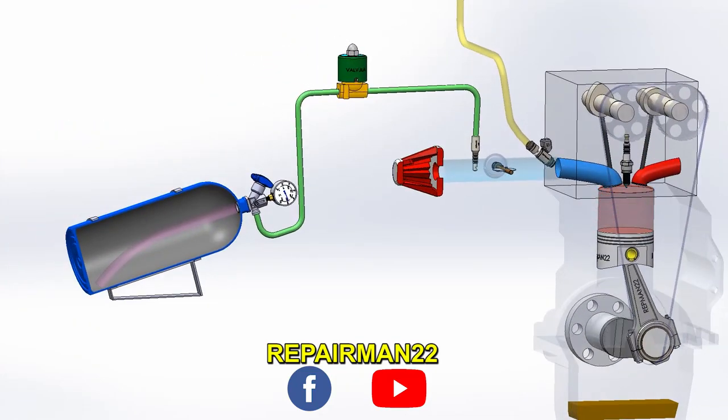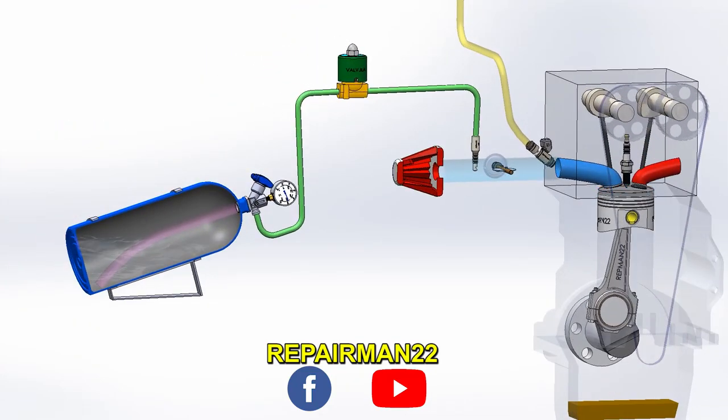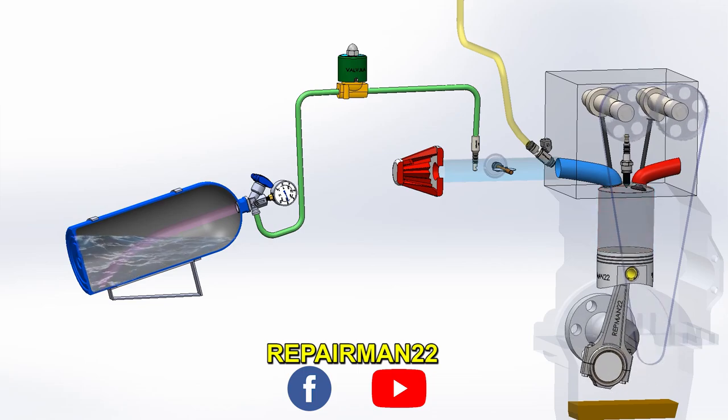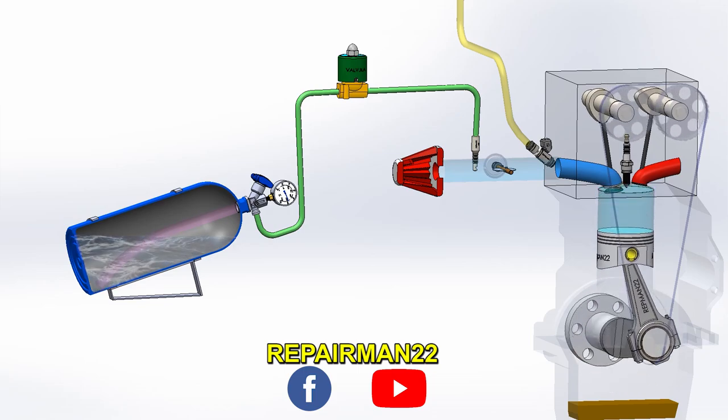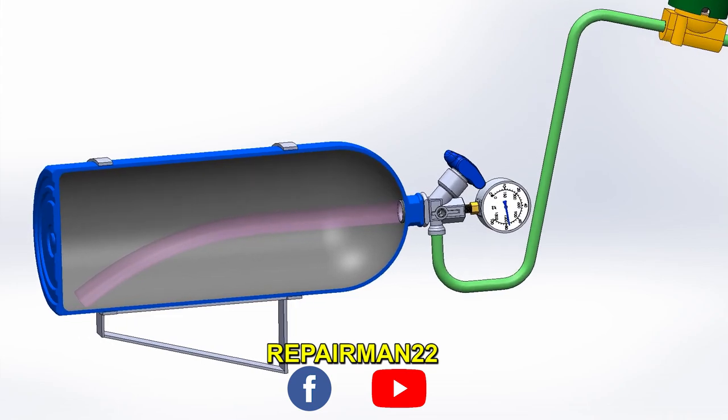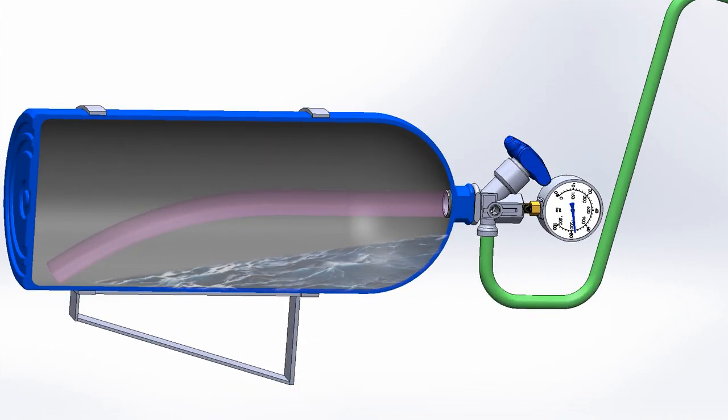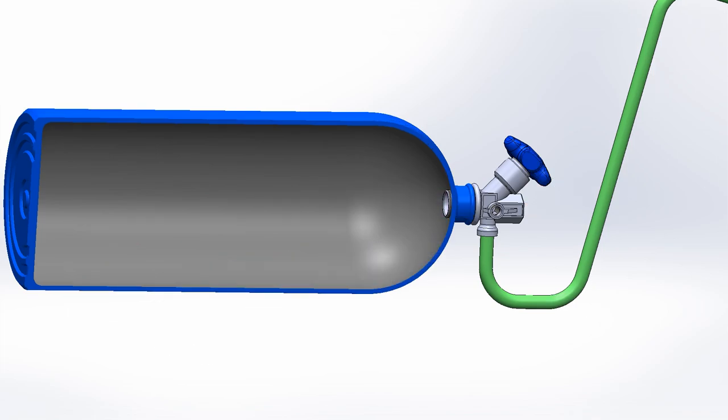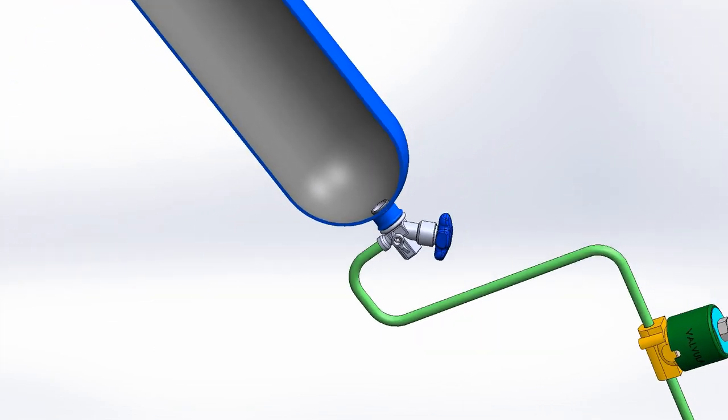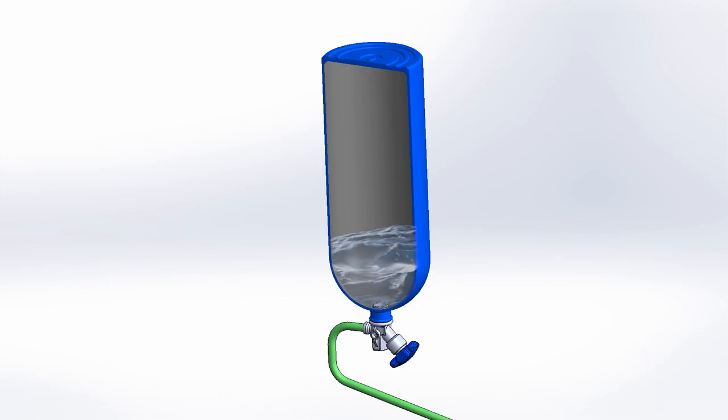The nitrous, being in the tank, is in a liquid state due to the high pressure. The bottle must be mounted with an inclination because inside there is a curved tube that sucks from the bottom. If the curved tube is at the wrong angle, it could absorb nitrous in a gaseous state. If the bottle does not have an internal sucking tube, it must be used completely inverted.